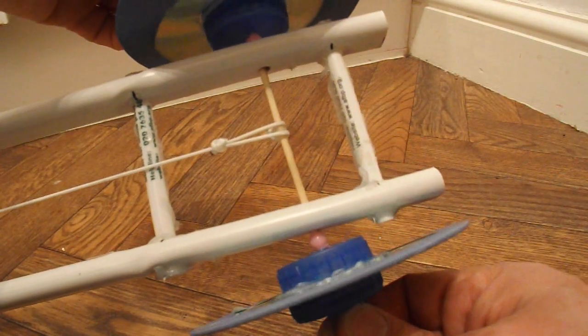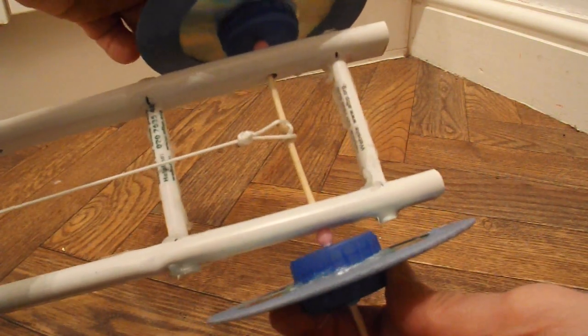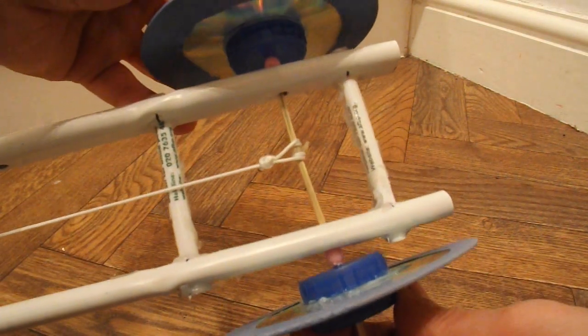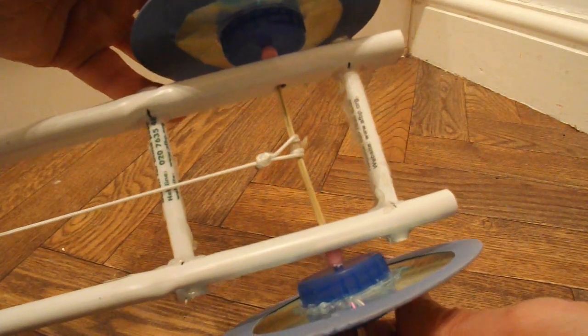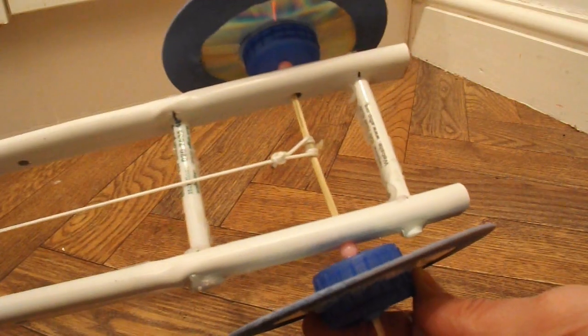So as soon as I start to wind it up you can see the axle is bending. As soon as I get on to the second turn. So, thicker axle and this would go flying.